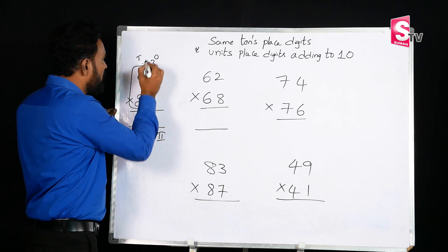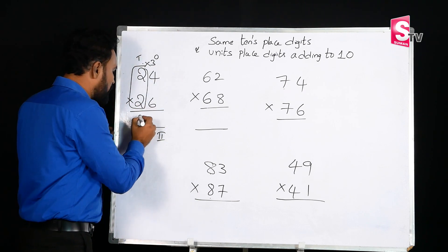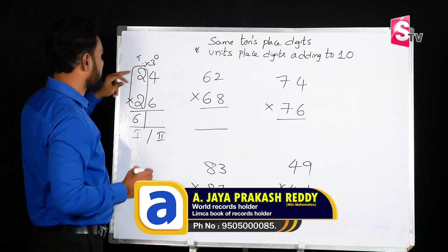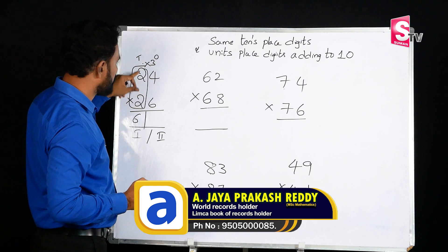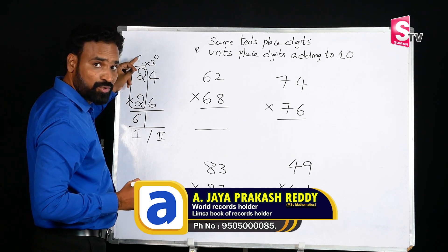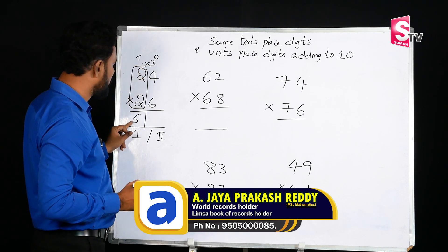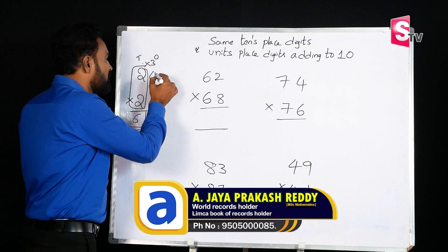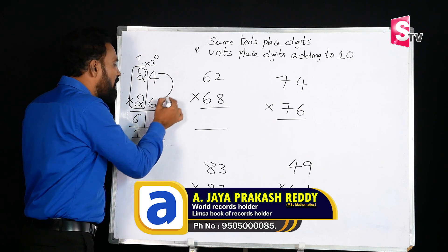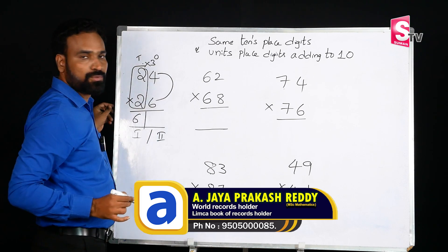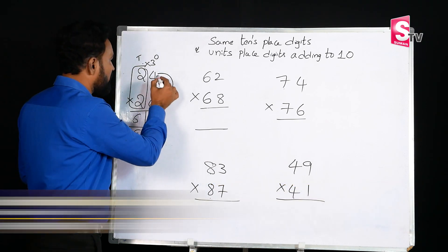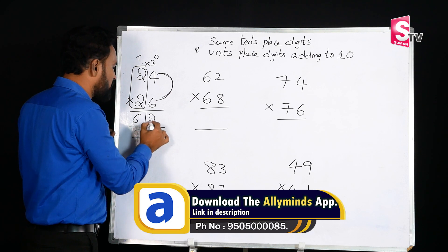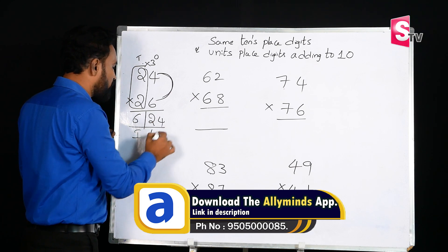So, what is 2 times 3? 2 times 3 is 6. That is the first part of the answer — we multiply the tens-place digit by the next consecutive number. We write 6. Next, for the second part, we multiply the unit-place digits: 4 times 6 equals 24.